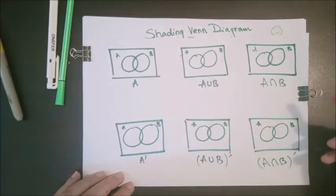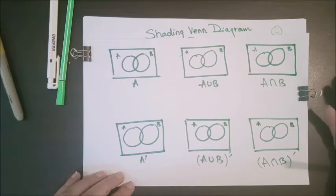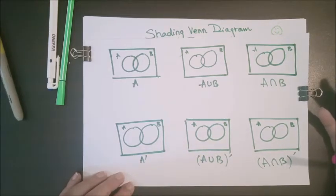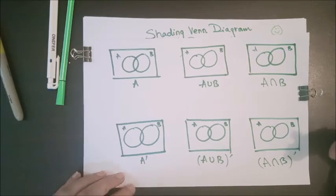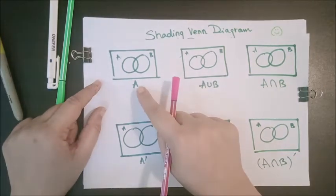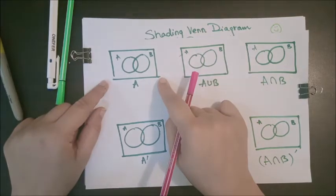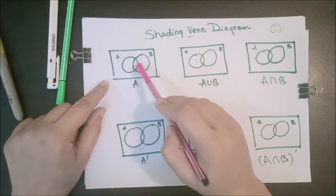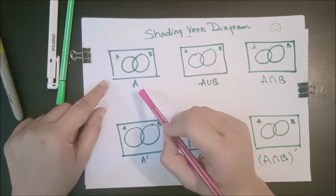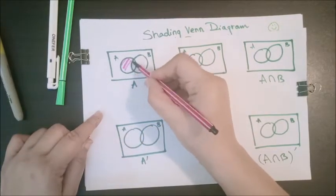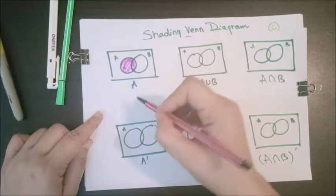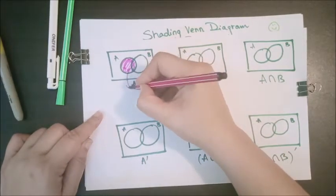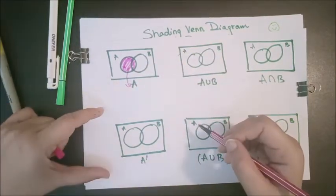I have six diagrams here — some related to union, some to intersection, and there is also complement. We will discuss one by one how to shade these cases. The first one is set A. From the universal set (the rectangle), one set is A and the other is set B. You have to shade the A part, which I will represent in pink. So this whole region is my set A.